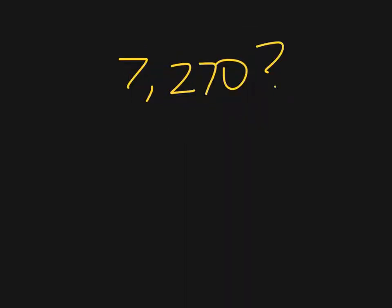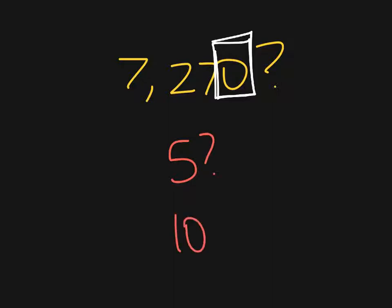Let's take a look at the number 7,270. Once again, we're looking at the number in the ones place, thinking about 5 or 10. It ends in a 0, so that would be true for 5 — 5 can go into 7,270 because it ends in a 0. And it also can be divided by 10 because it ends in 0 as well. Remember, the rules for 5 and 10 somewhat overlap because they both share that rule of ending in 0.